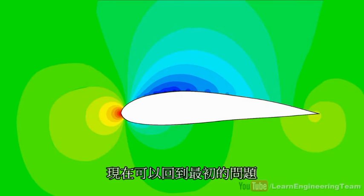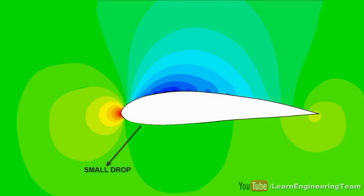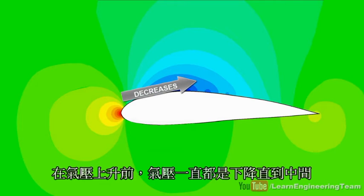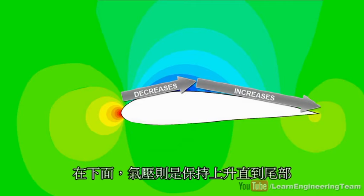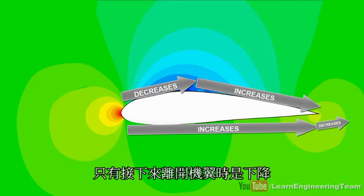Now, back to the initial question. To facilitate the analysis, we can neglect this very small drop in pressure. You can see that at the top, the pressure decreases almost to the midpoint before it increases. At the bottom, the pressure keeps on increasing until it reaches the tail. Only after that does it decrease.